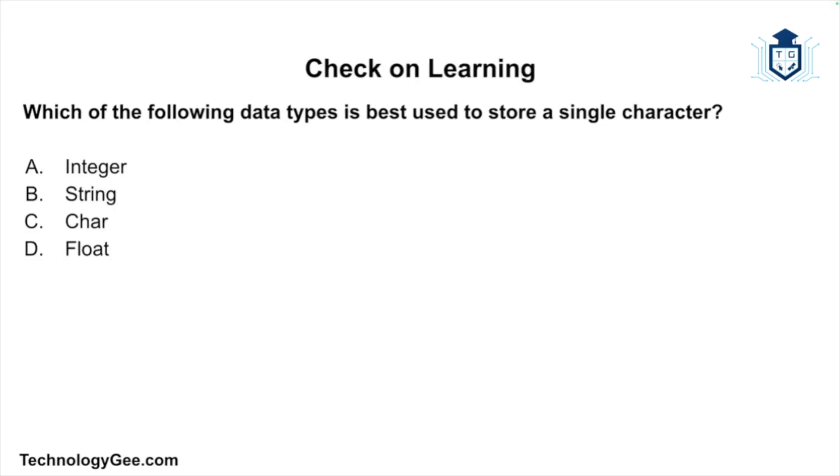Now with all of that said, let's do some check on learning. Which of the following data types is best used to store a single character? Would it be integer, string, char, or float? And of course, the correct answer is char. The char data type is used to store a single character, such as the letter A or the number five, and it is typically one byte in size.